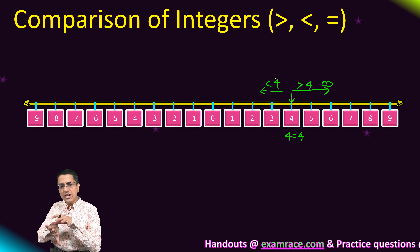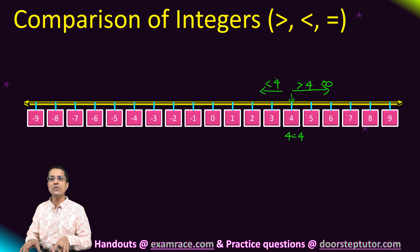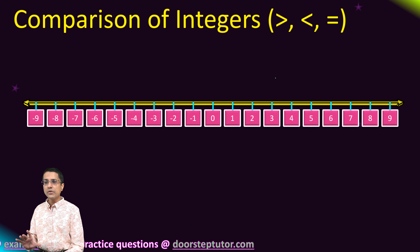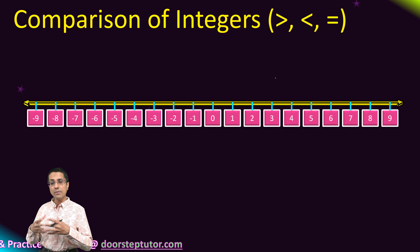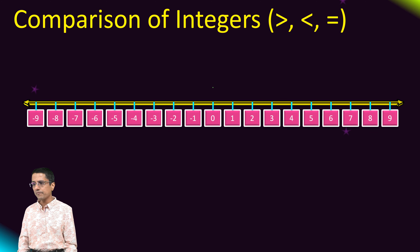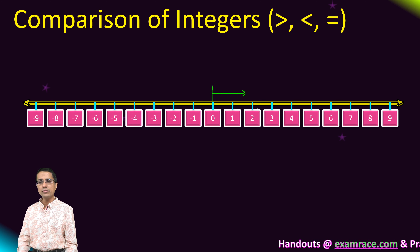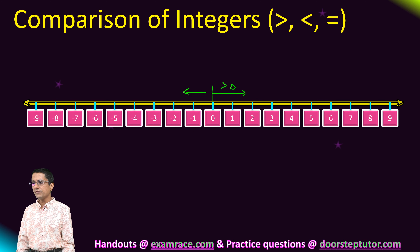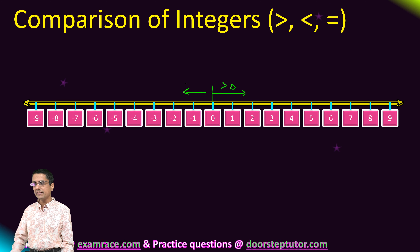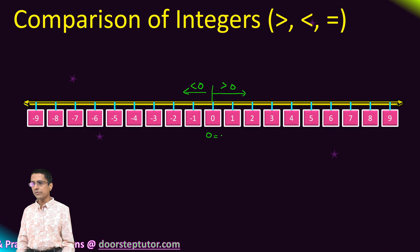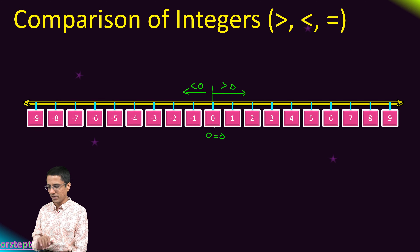That is how the less than, greater than, and equal to relation on this number line works. If you have a question on the comparison of integers, you should always consider the number line. For 0: all numbers to the right — 1, 2, 3 till infinity — are greater than 0. All numbers to the left — minus 1, minus 2 until minus infinity — are less than 0, and 0 equals 0.